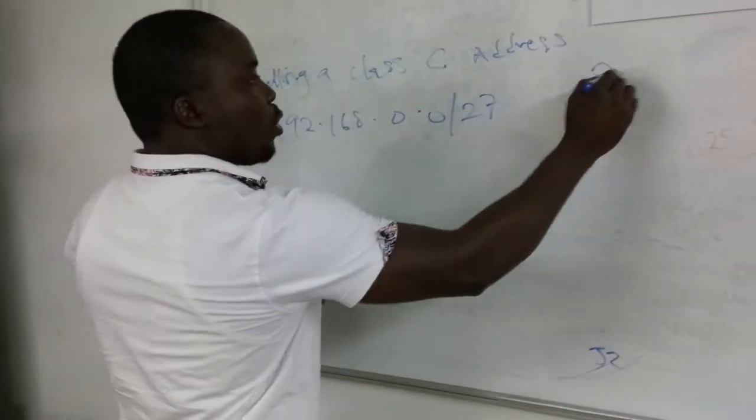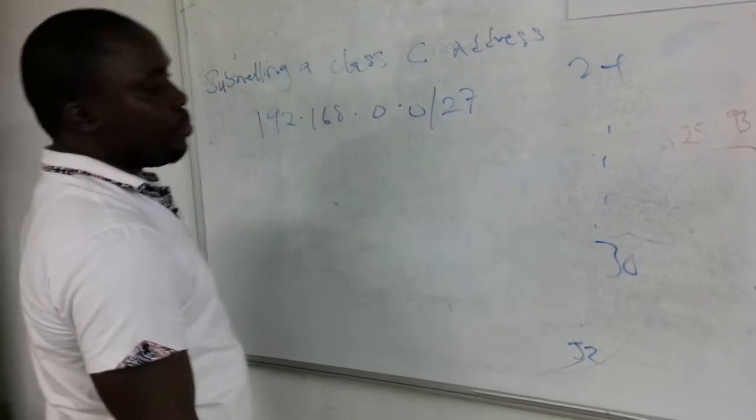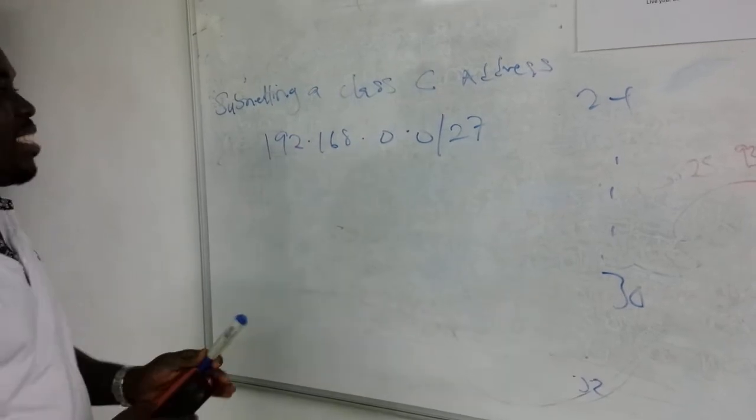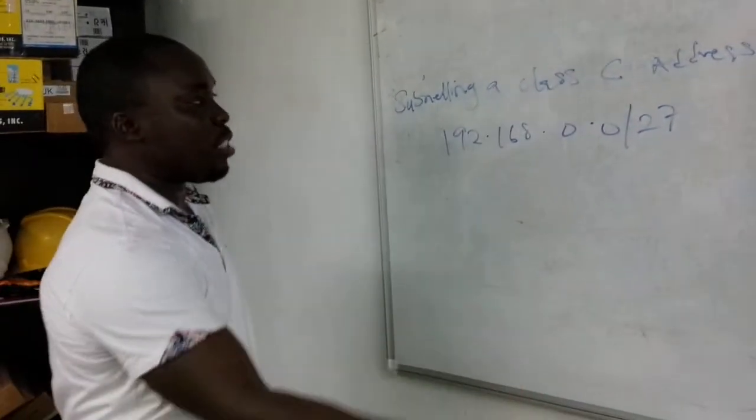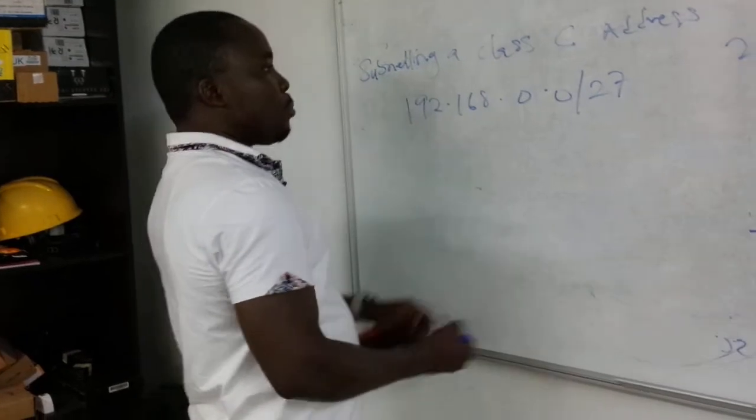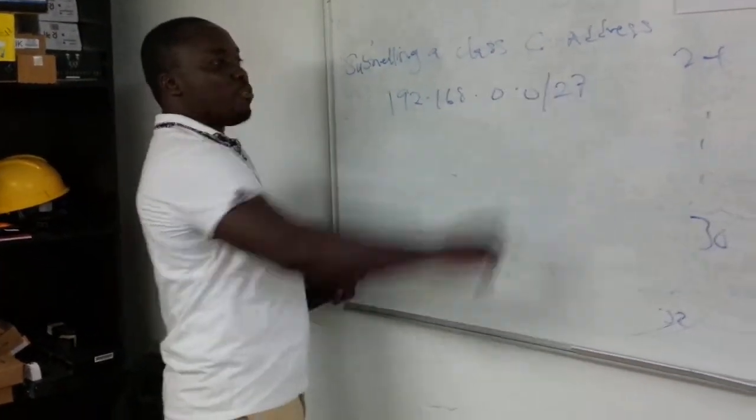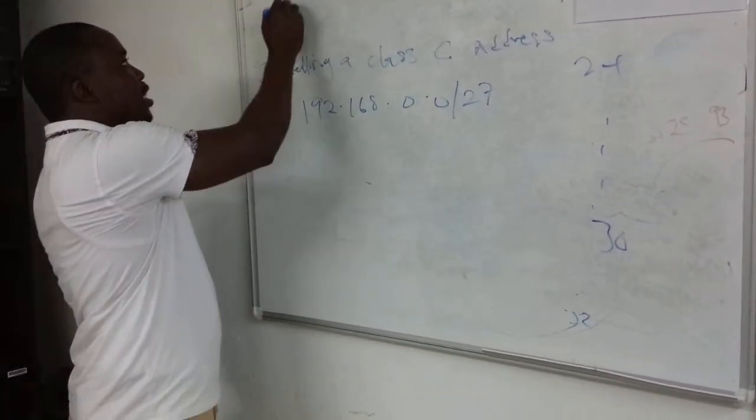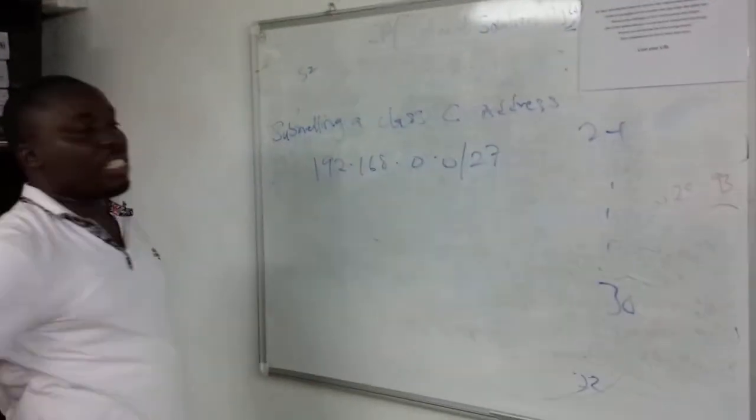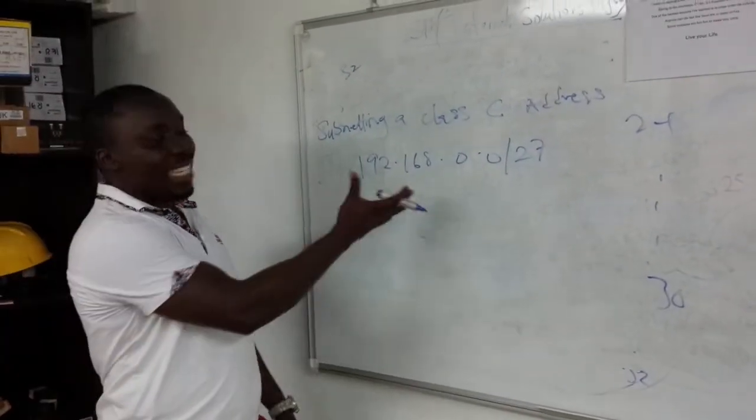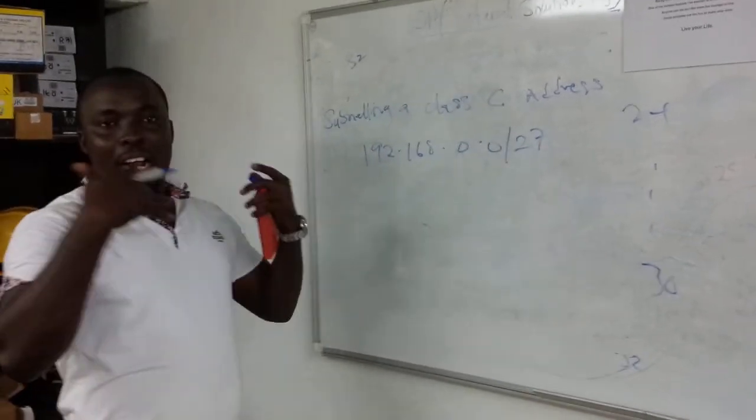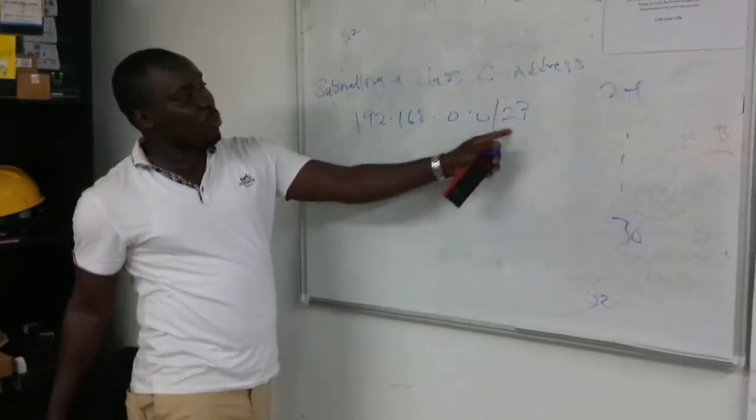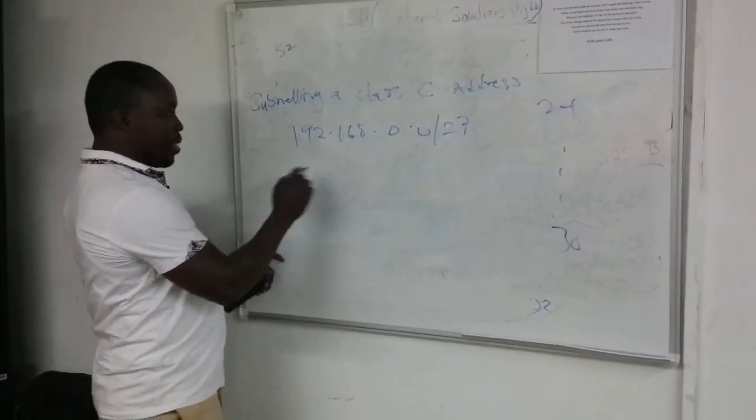Remember, I told you that you can do from 24 to 30. So if you're given /27 and you want to subnet it, it's very easy. Subnetting means borrowing bits from the host bits to add to the network bits. When you have /27, this means you have 27 bits turned on, and the remaining 5 bits for hosts. The total bits you have in an IP address is 32.